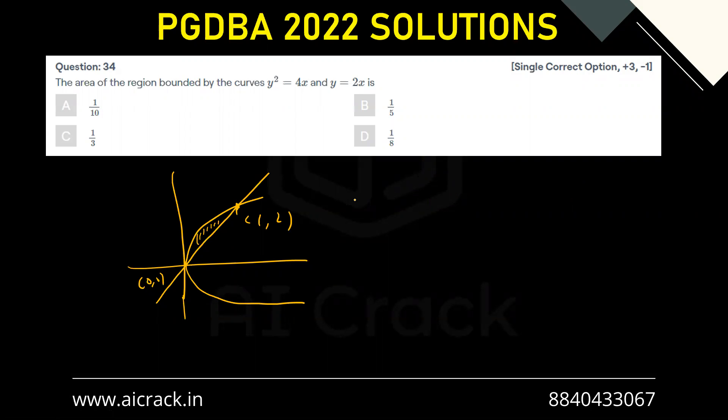Now the standard format would be integral 0 to 1 of y₂ minus y₁. Here y₂ is √(4x), so √(4x) minus 2x dx. That gives me integral 0 to 1, taking 2 as common factor, x^(1/2) minus x dx.